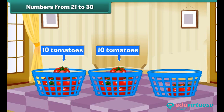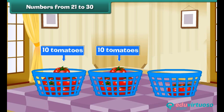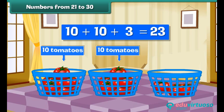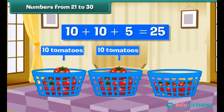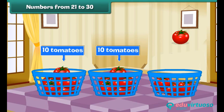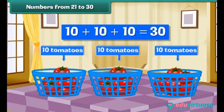Place one more tomato in the third basket. We have two tens and two, that is 22 tomatoes. Similarly, two tens and three make 23, two tens and four make 24, two tens and five make 25, two tens and six make 26, two tens and seven make 27, two tens and eight make 28, two tens and nine make 29.